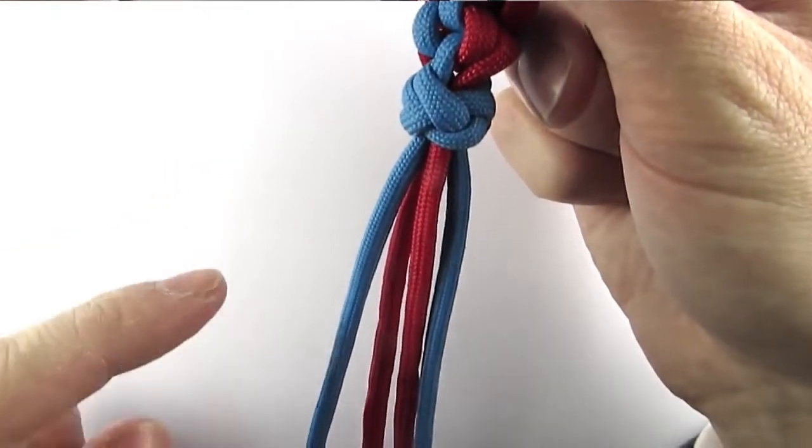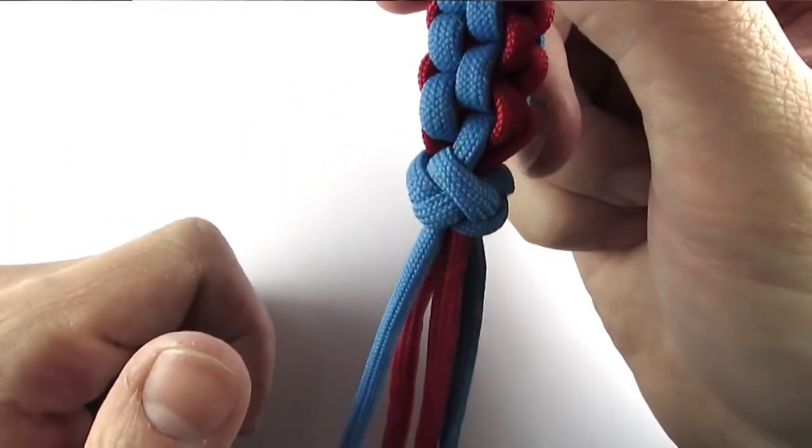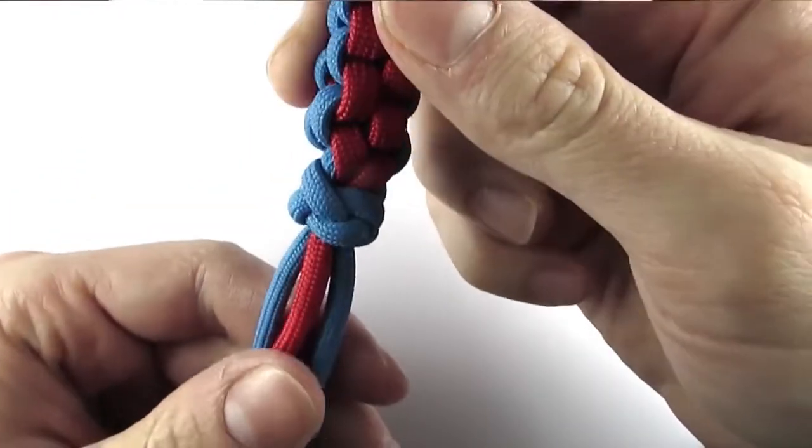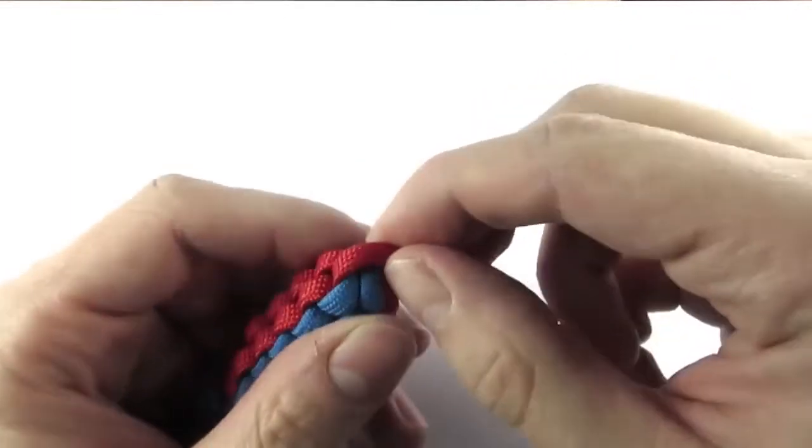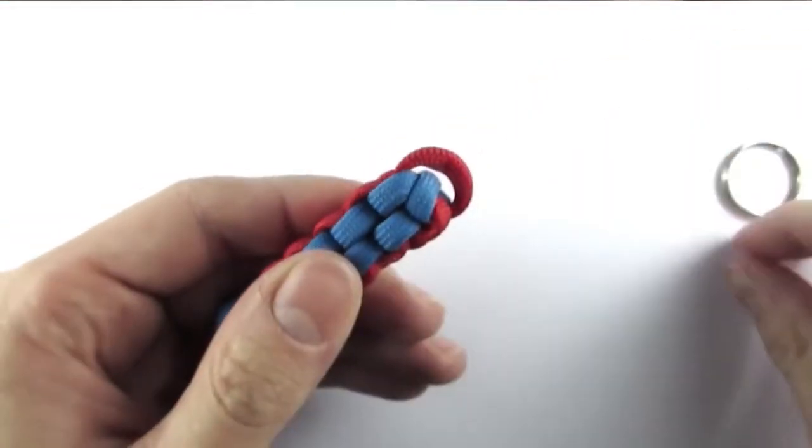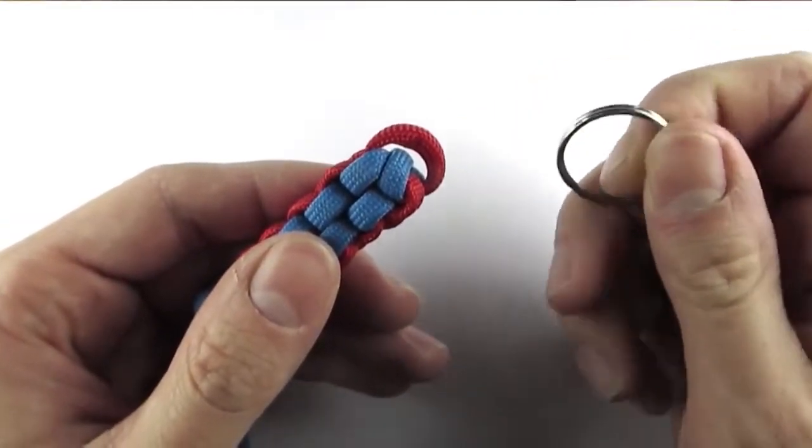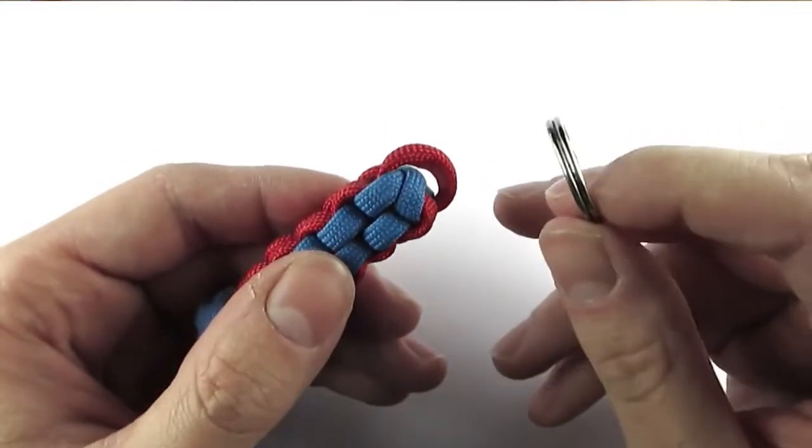You would now cut these ends at the bottom and you would have a little flush coming out of it, or you could cut it near the end. You can also insert a keyring at this point and you are done.